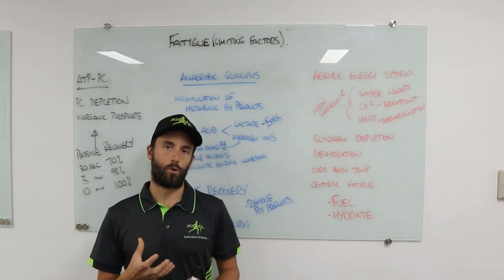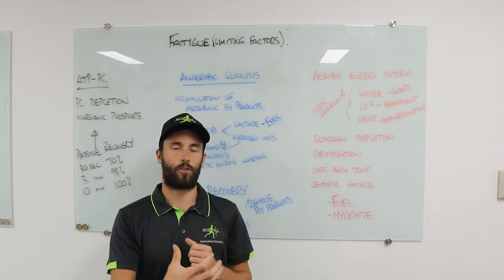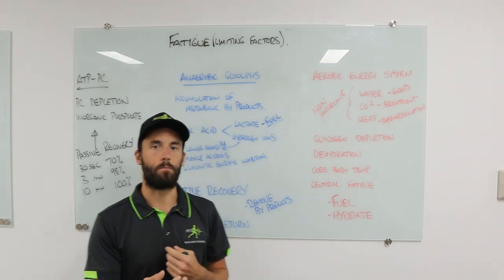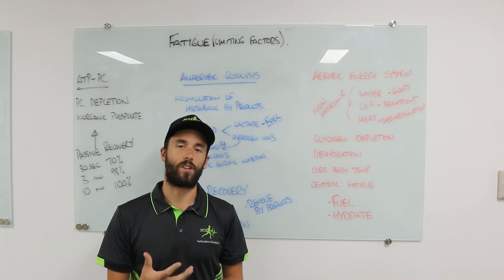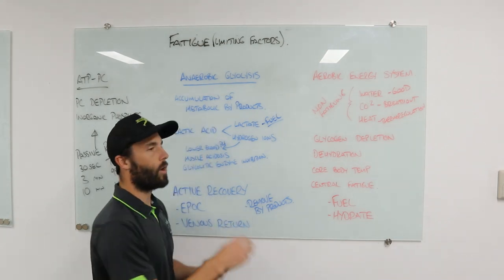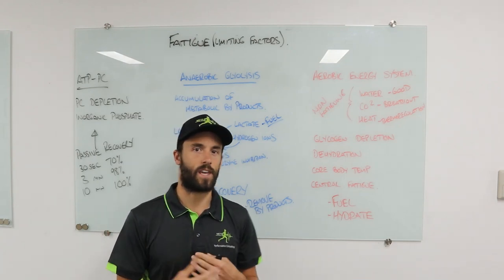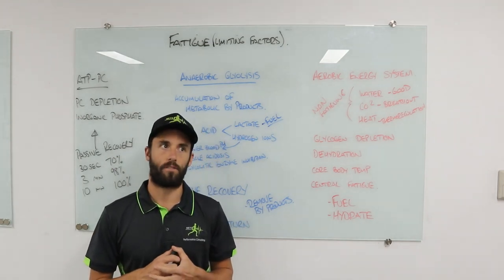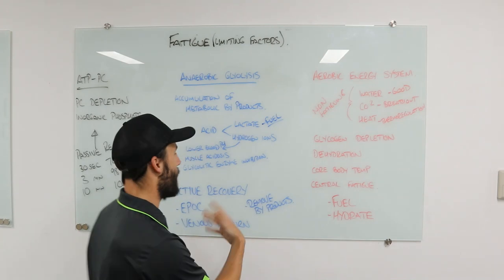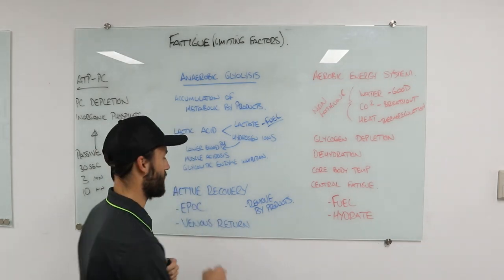Active recovery also helps with venous return. Venous pooling refers to blood gathering in the veins. By the time blood travels around the body into the veins, blood pressure has dropped, making it harder to return blood to the heart — like swollen feet and ankles on a long-haul flight. We don't want metabolic byproducts stuck in the legs, so we assist venous return through the skeletal muscle pump: leg muscles contracting puts pressure on the veins, helping return blood. Active recovery extends EPOC, keeps oxygen coming in to clear byproducts, and avoids venous pooling via the skeletal muscle pump.